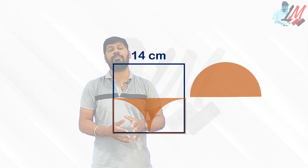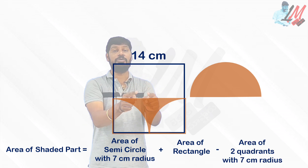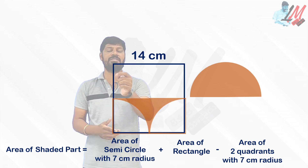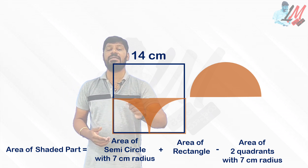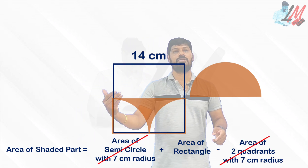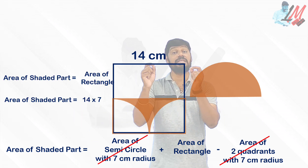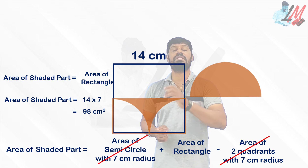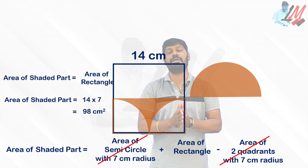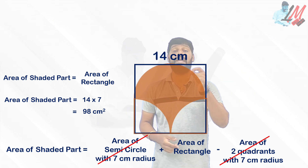The area of the shaded region equals the area of the semicircle of radius 7 centimeters (diameter 14 cm) plus the area of the remaining part of the rectangle minus the two quadrants. The two quadrants together equal one semicircle — which is positive in one term and negative in the other, so they cancel out. Therefore, the area of the shaded region equals the area of the rectangle: 14 × 7 = 98 centimeters squared.